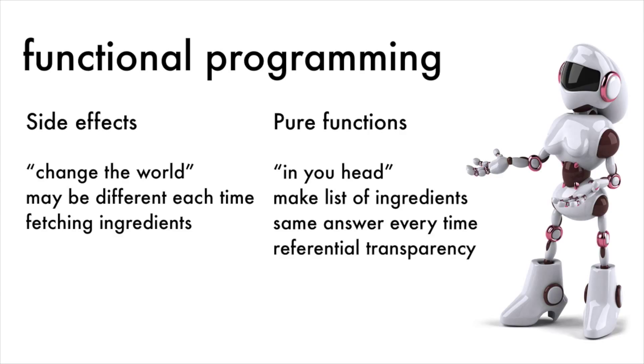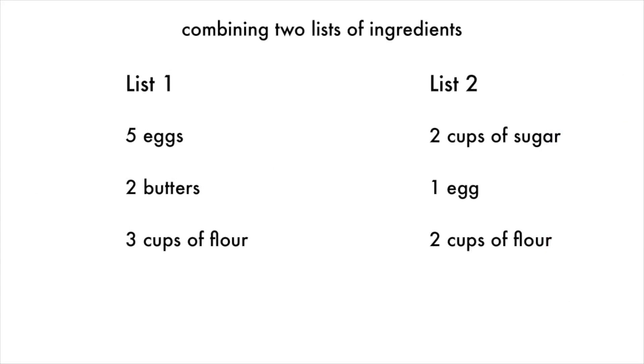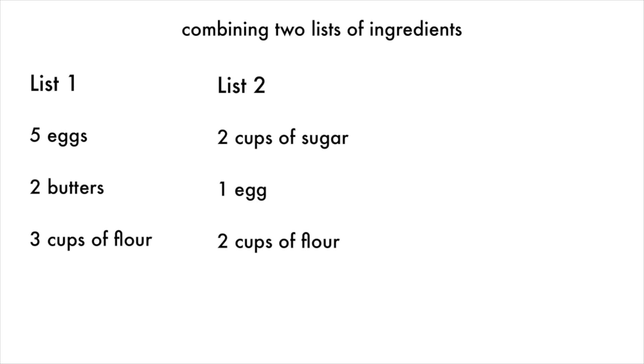Let's imagine we have two lists of ingredients. We want to give it to someone to go shopping for us. How do we combine them into one list? It's easy. We see that eggs are in both lists, so we add the amounts and put the results on the new list.